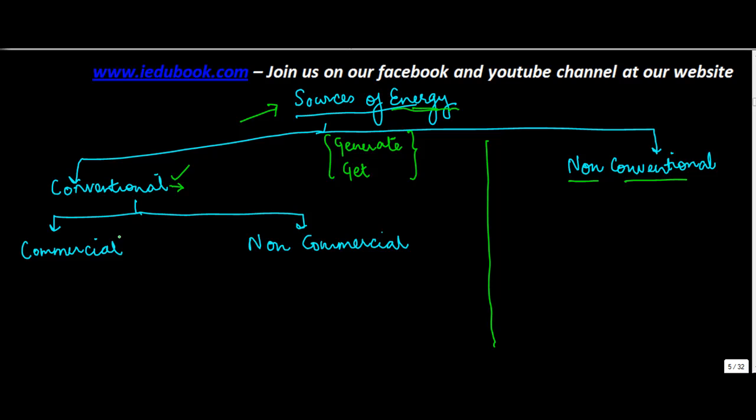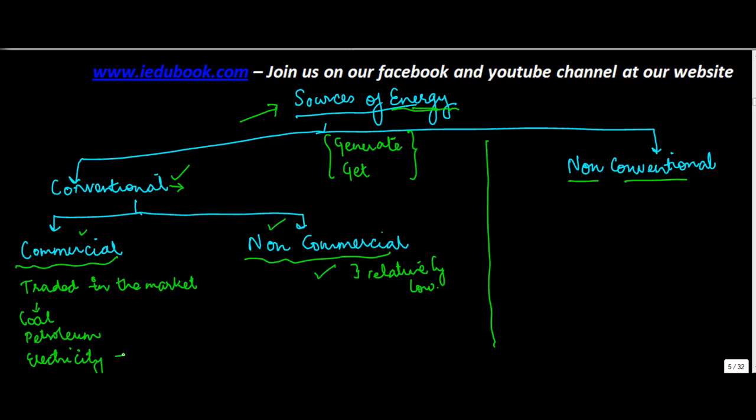Let's take them one by one. These are further divided into commercial and non-commercial. Commercial are the ones which are traded in the market. What are these? These are basically coal, petroleum, and electricity. There are companies which are into commercial production of these three. Coal is one of the largest means of energy in India. Depending on your geography, it's one of the largest means used across the globe.